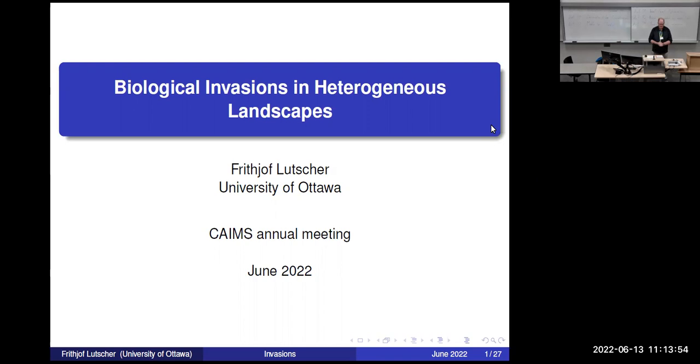Fritjof and I actually shared an office when I was a postdoc and he was a PhD student in Tübingen under the leadership of Karl Hadler. After his PhD in 2000, he came to University of Alberta to work with Mark Lewis as a postdoc. And since 2005, he's been a faculty member at University of Ottawa. He has had tremendous impact in modeling population biology and ecology, well known for his work on river ecosystems and recently published the first book on integral difference equations in mathematical biology.